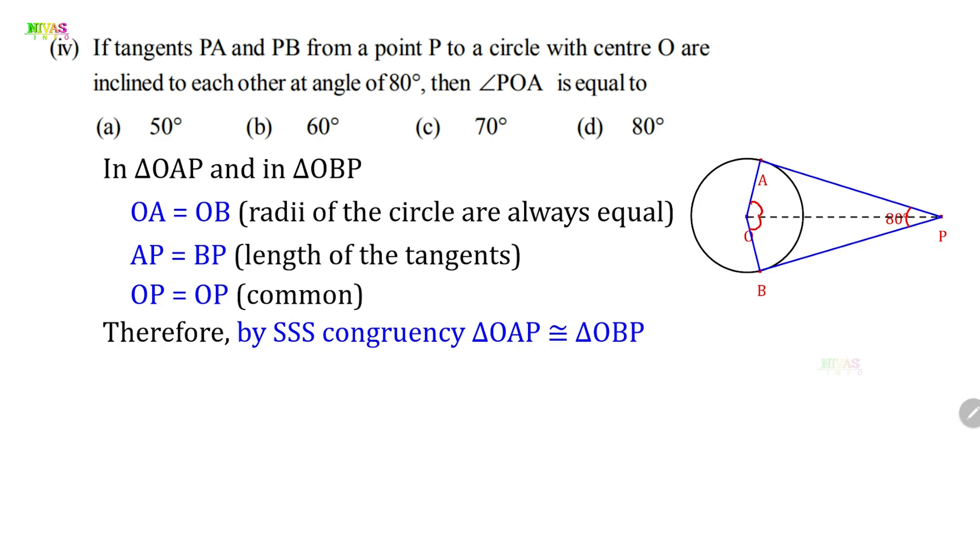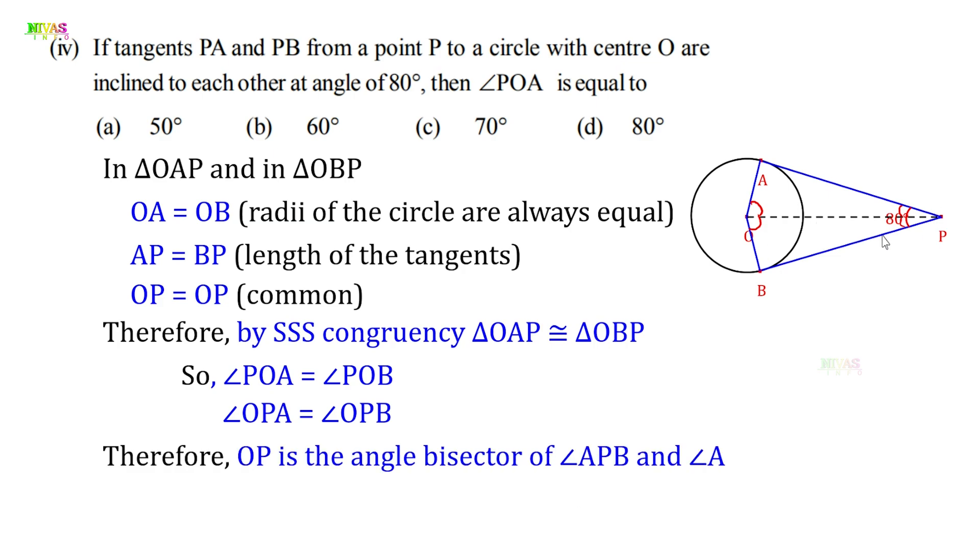Angle POA is equal to angle POB. Similarly, angle OPA is equal to angle OPB. Therefore, OP is the angle bisector of angle APB and angle AOB.